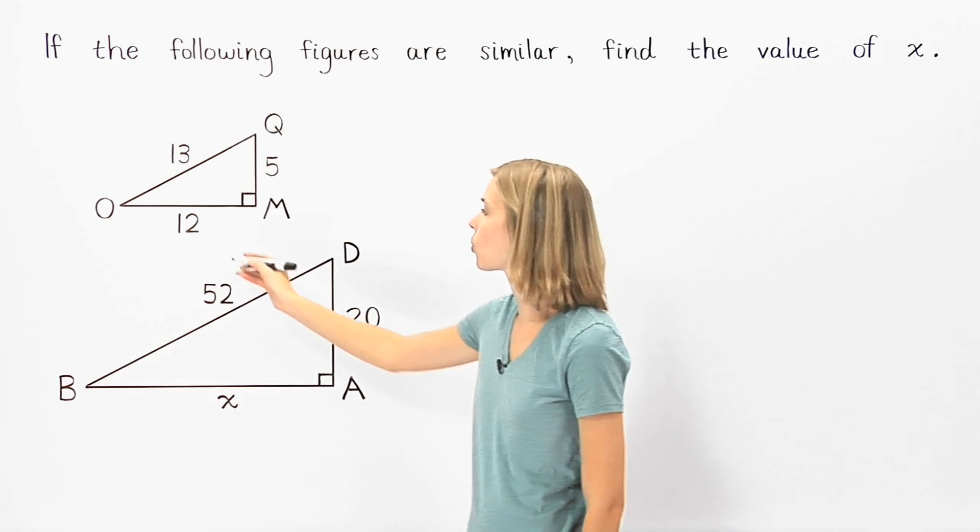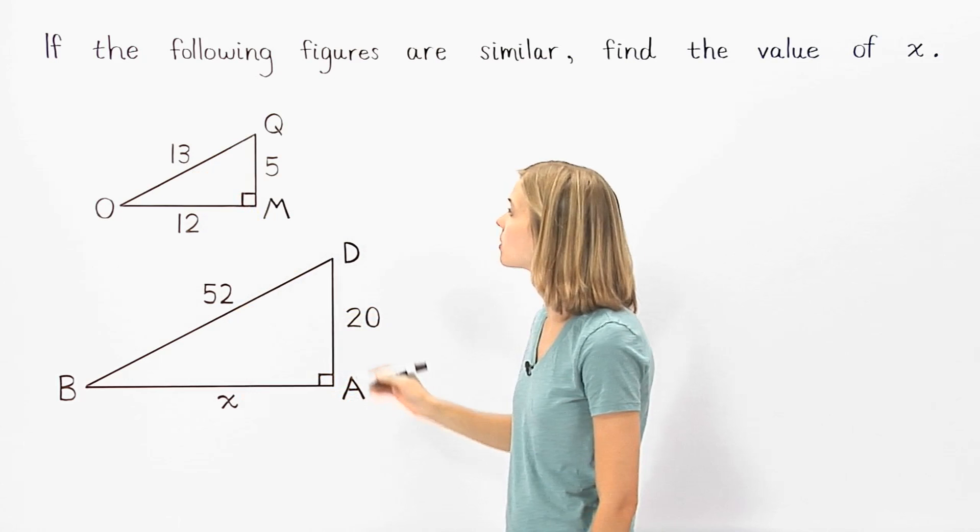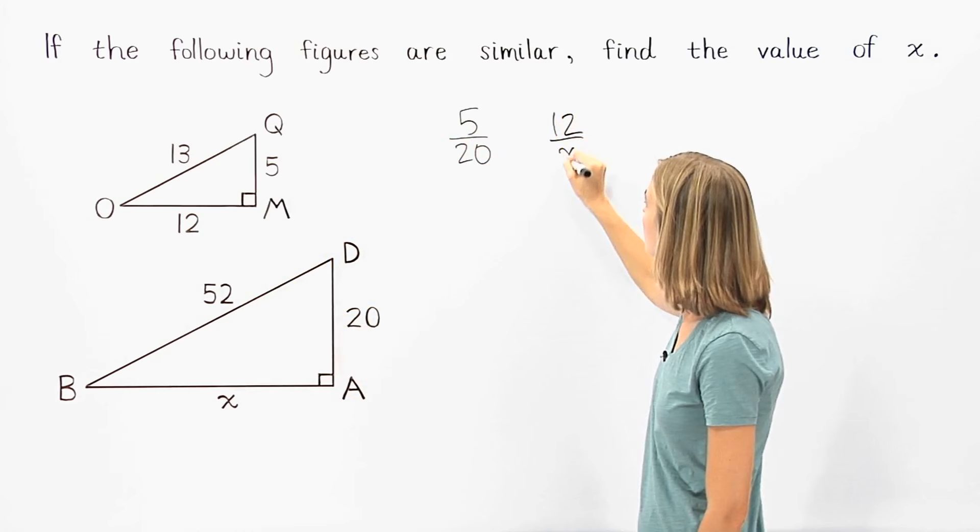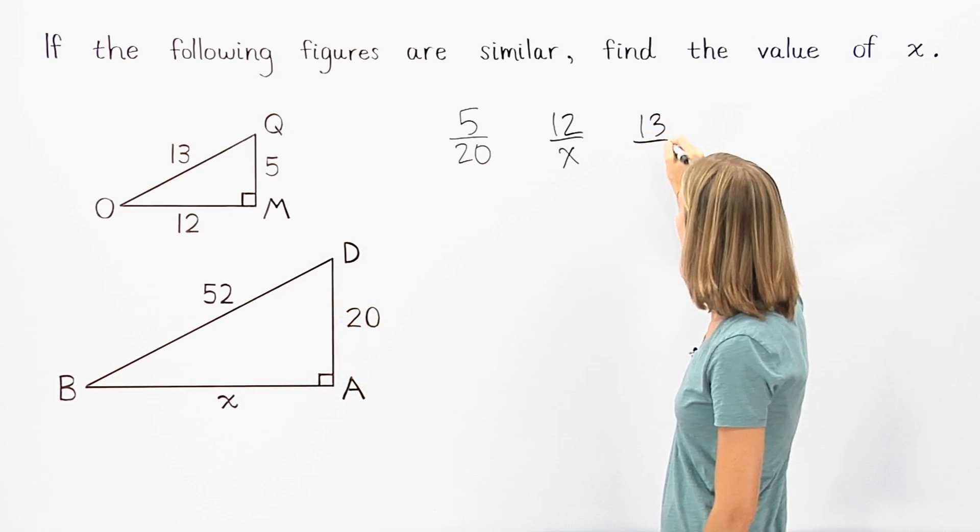So the ratios 5 over 20, 12 over x, and 13 over 52 must all be equal.